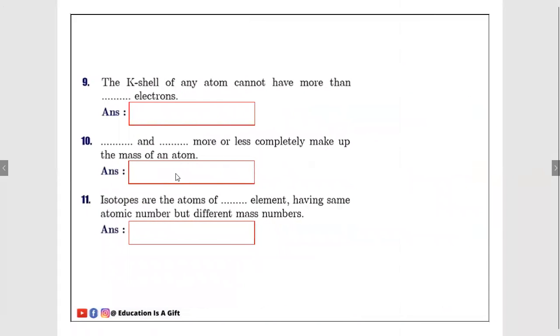Number nine: The K shell of any atom cannot have more than dash electrons. Already in MCQs we discussed, and in concepts your teacher might have discussed. We have shells like K, L, M, N, and to find the number of electrons, we have to go with the formula 2N². K means it is first orbit, L means second, M third, N fourth orbit. If you see, they are asking about K shell, it is 2 × 1², that equals 2 × 1, equals 2 electrons. So K shell of any atom cannot have more than 2 electrons, but it can have less than 2 electrons.